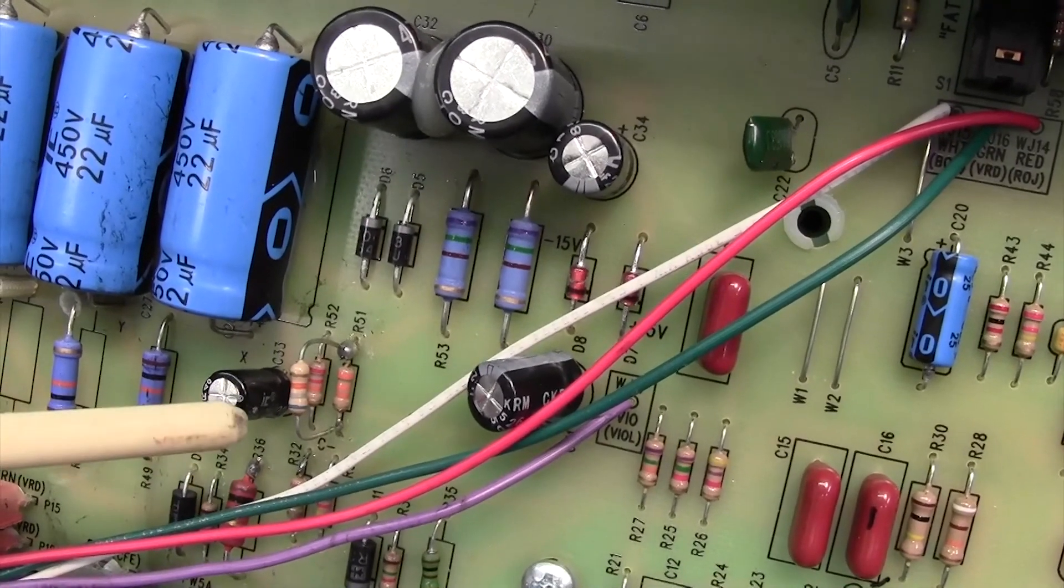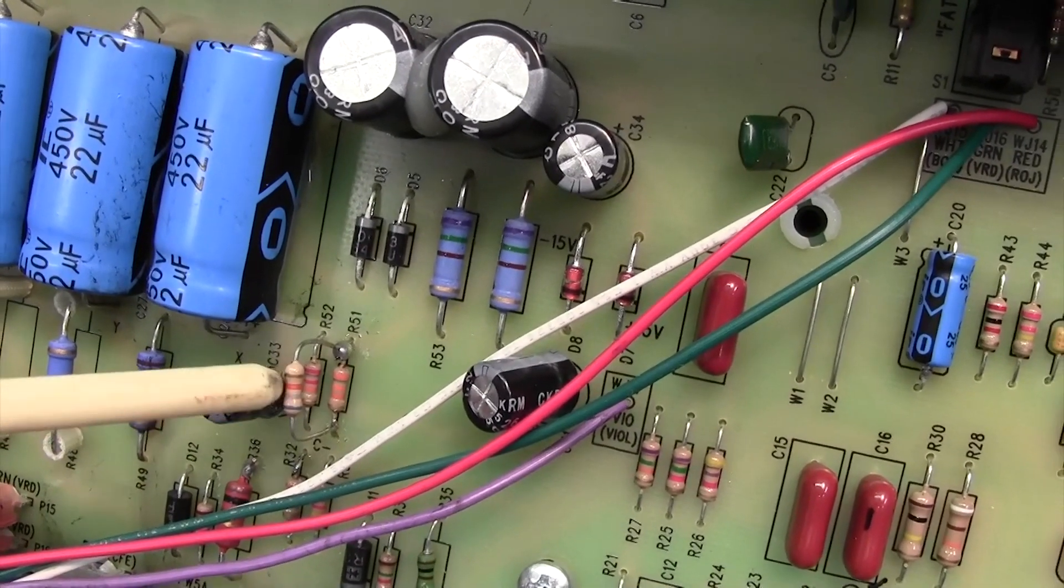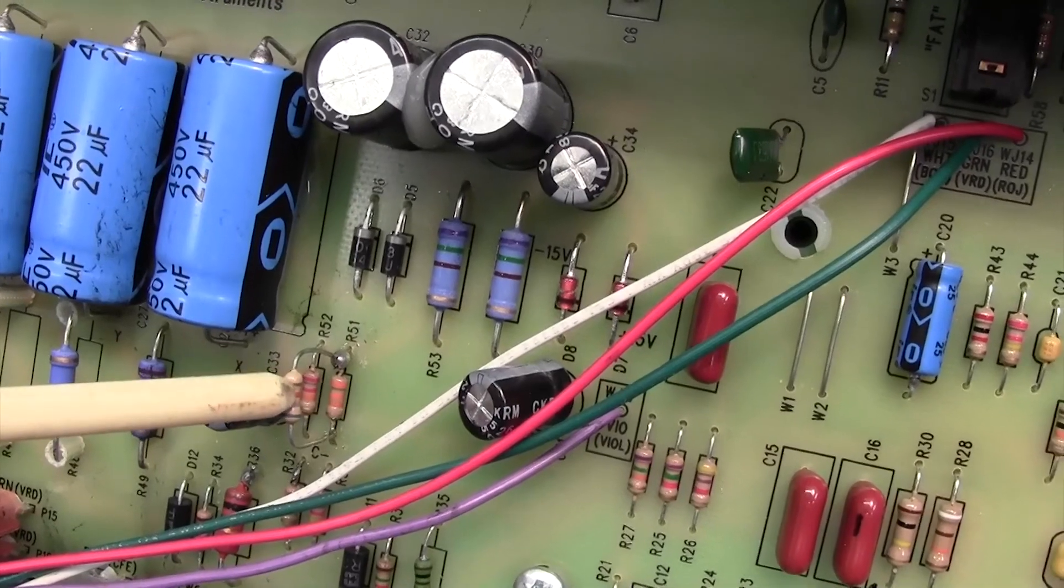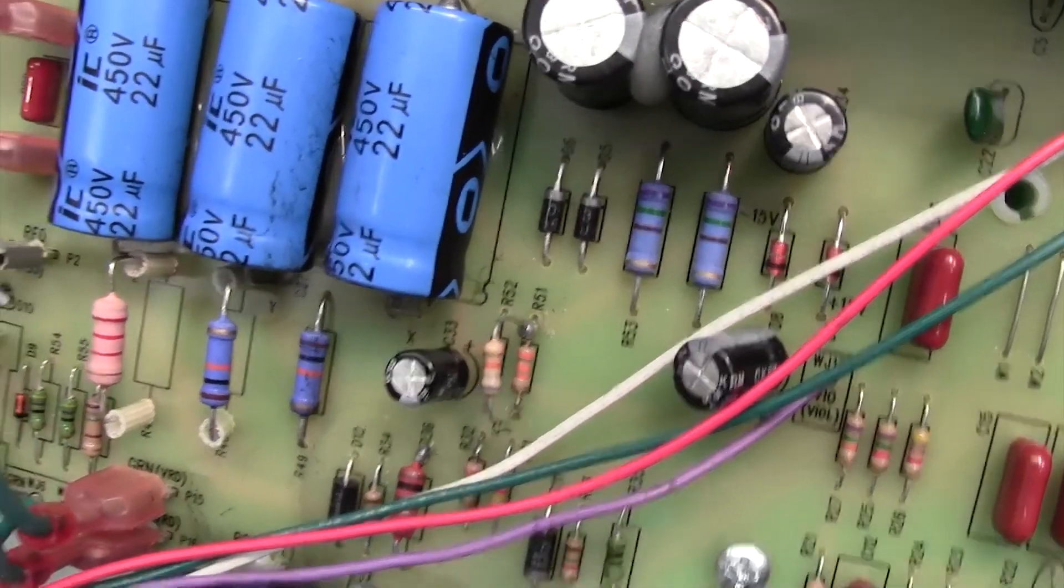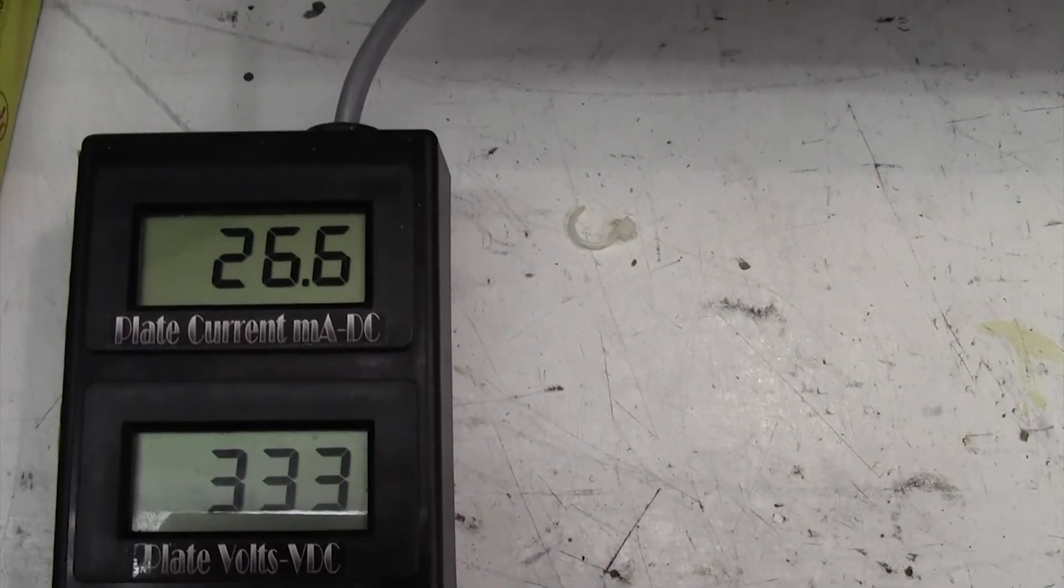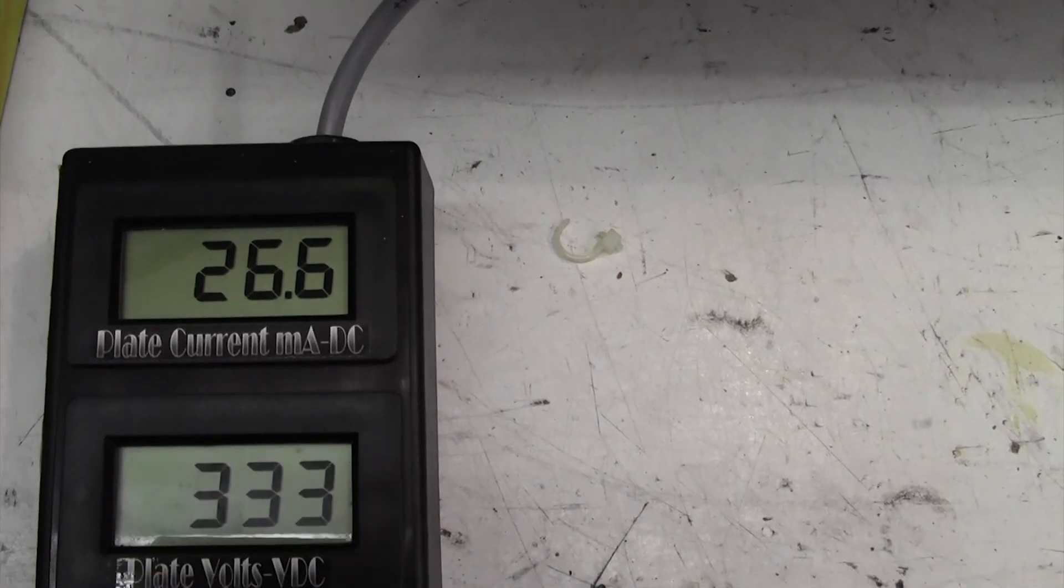Right, well in the end I did decide to go for the 25mA bias, and so I ended up putting a 68k resistor across the existing 33k. And if we go down to our bias meter, you can see we've got, well, 26mA, which is fine.